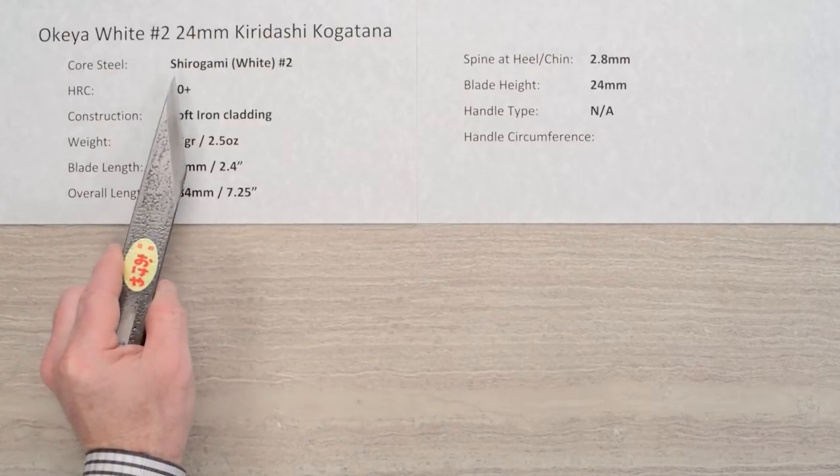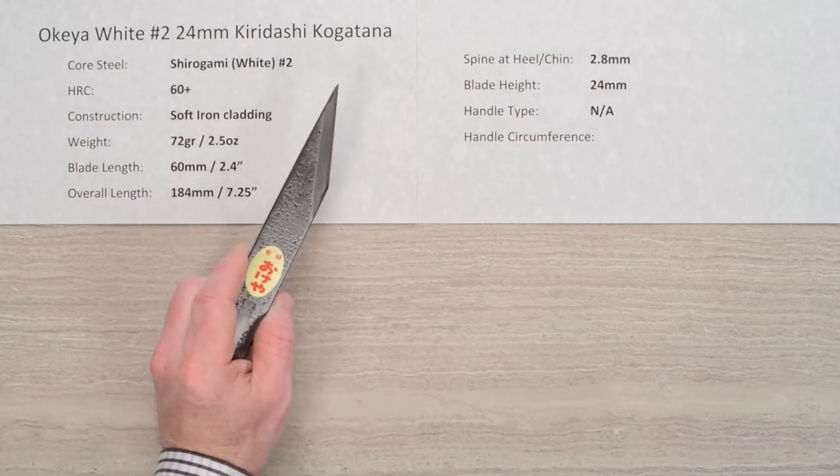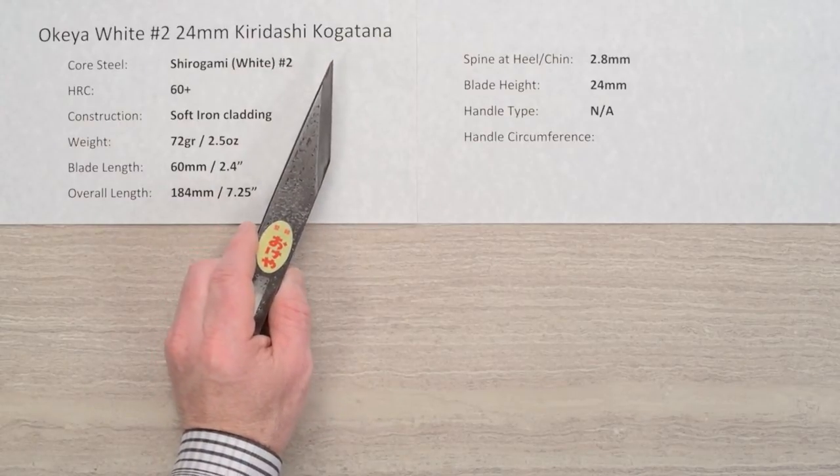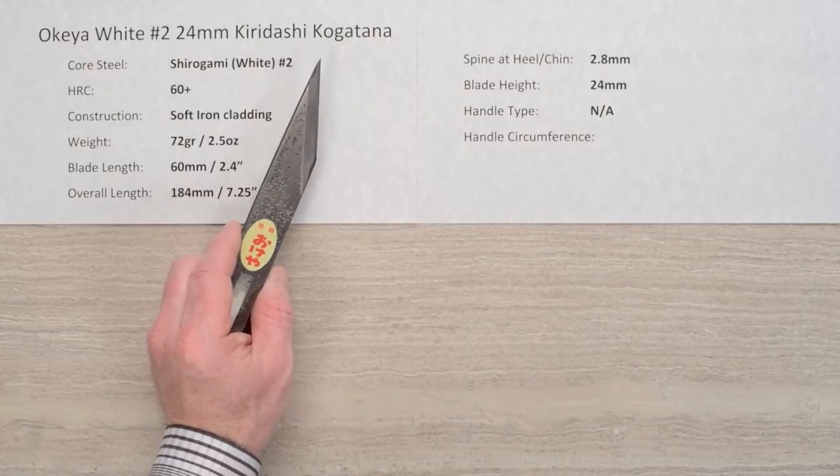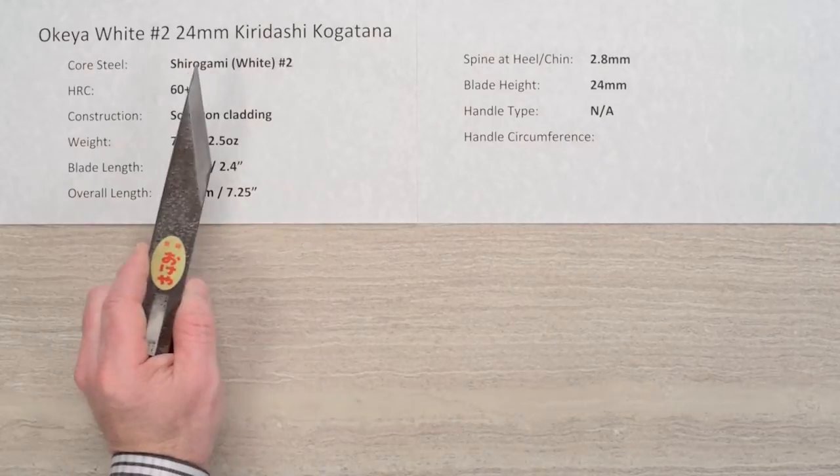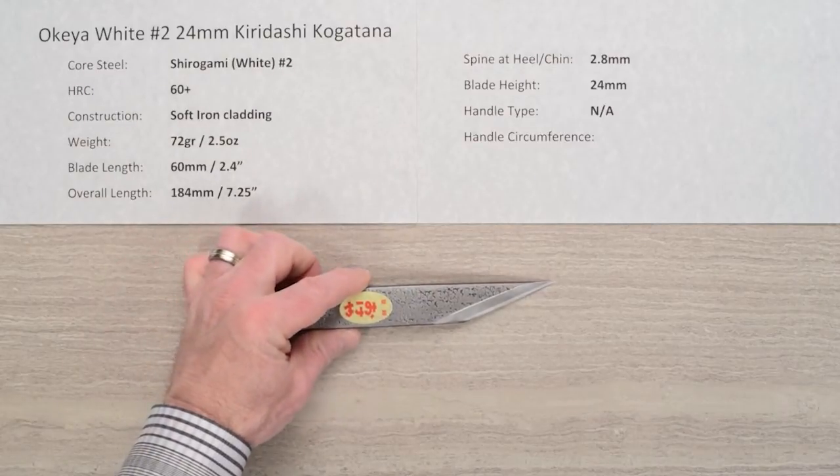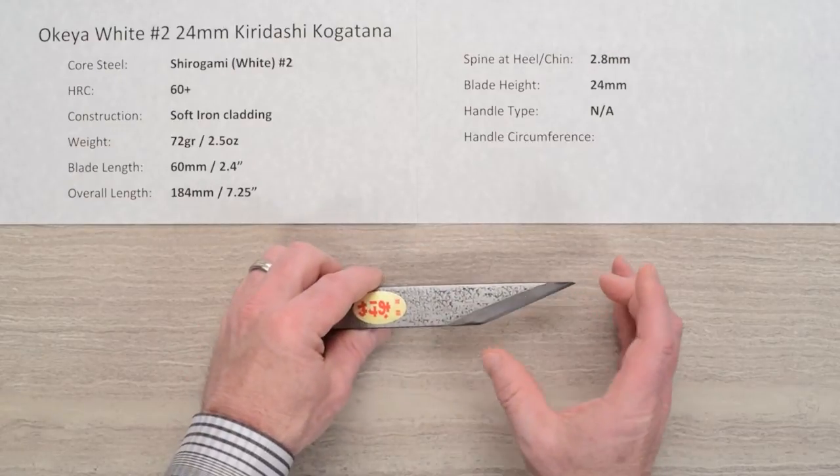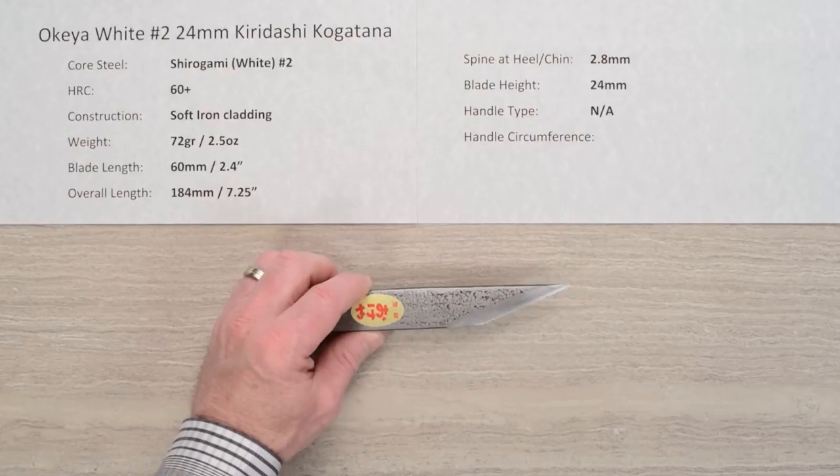This is the Okea Shirogami or white paper number two, 24 millimeter. It's listed on the Chef Knives2Go site as a Kogatana and I did some research. A lot of times the Kogatanas are listed as curved wood carving knives, and a Kiridashi is known as a utility knife. A lot of them were shaped very similar to this with a straight edge and a point, so I'm going to label this as a Kiridashi Kogatana.